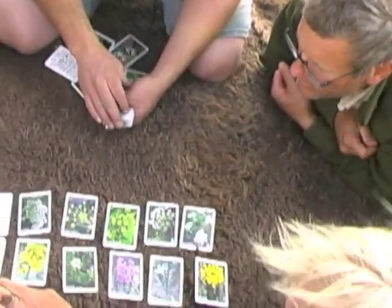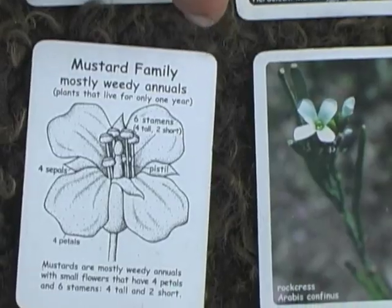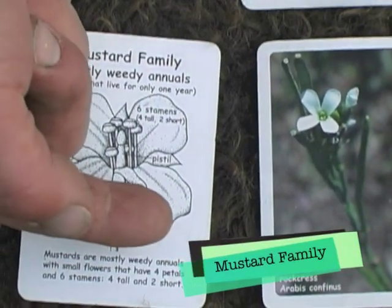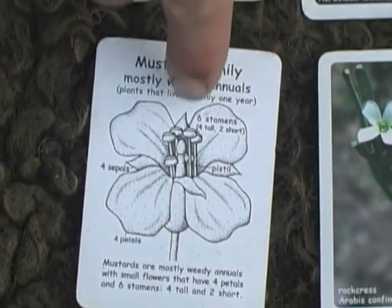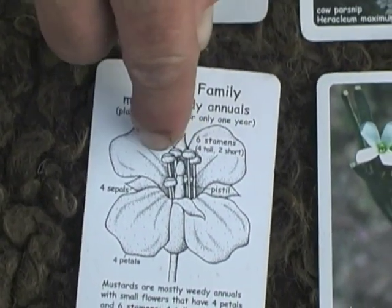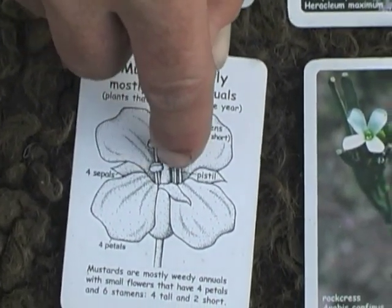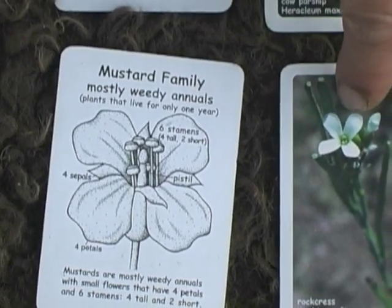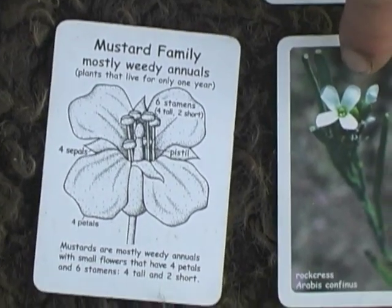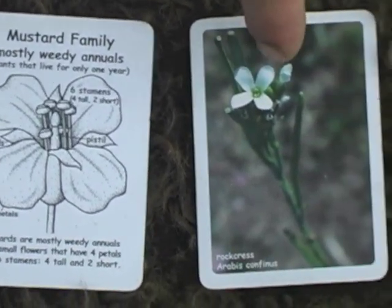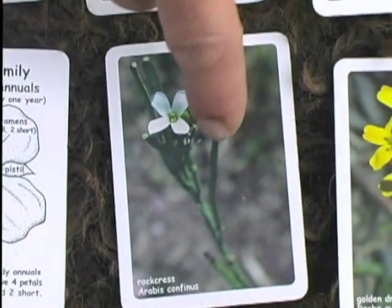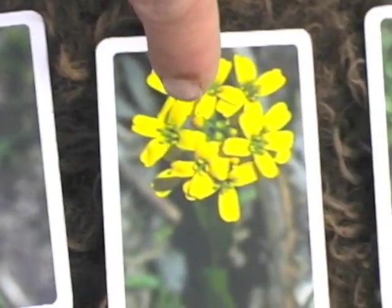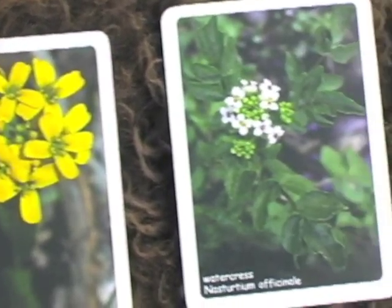The mustard family we introduced earlier — the pattern here is four petals with six stamens, four tall and two short. You won't be able to see the stamens in the pictures in the deck, but these are all of the four-petaled flowers in the deck that make up the mustard family.